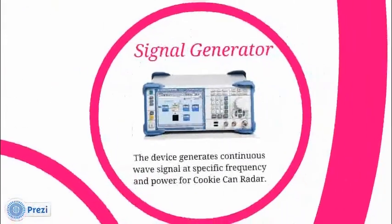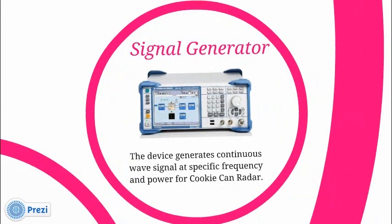How it works? The signal generator generates continuous waves at the specific frequency and power. Transmitter antenna uses electromagnetic signal to target. Reflective signal from the target is received by receiver antenna.